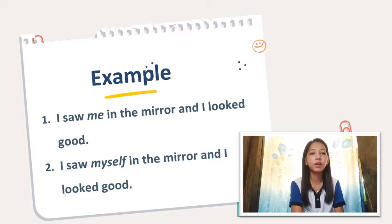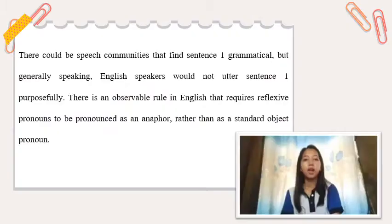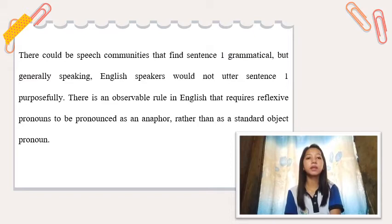The word 'me' in the first sentence is used as an object, while 'myself' in the second sentence is a reflexive pronoun used when you are the object of your own action. There could be speech communities that find sentence one grammatical, but generally speaking, English speakers would not utter sentence one purposefully. There is an observable rule in English that requires reflexive pronouns to be used as an anaphor rather than as a standard object pronoun.